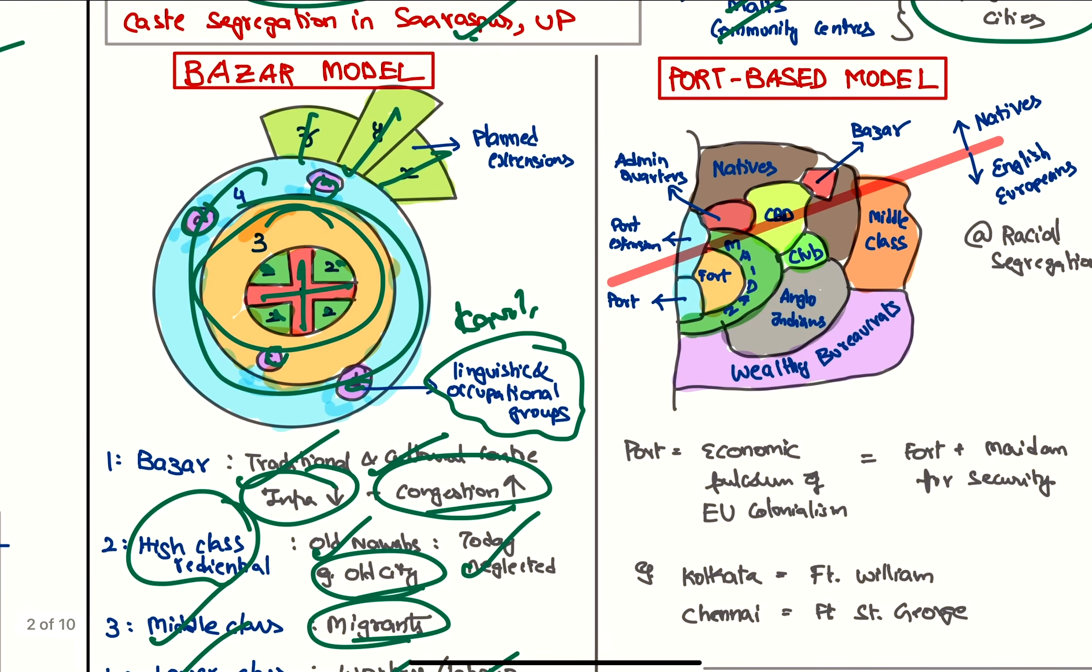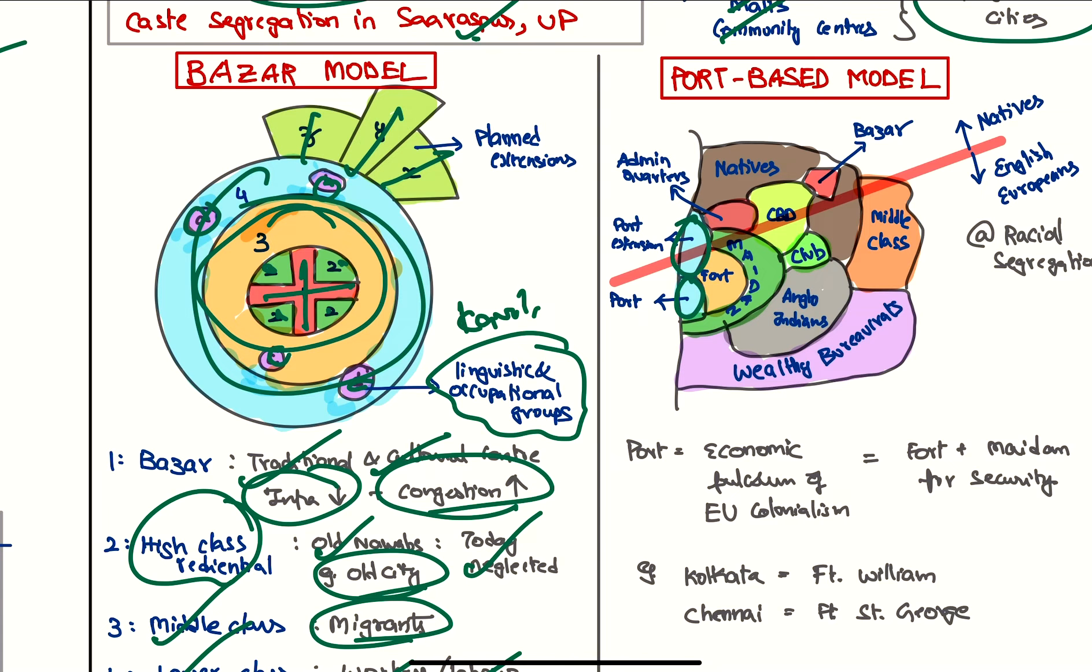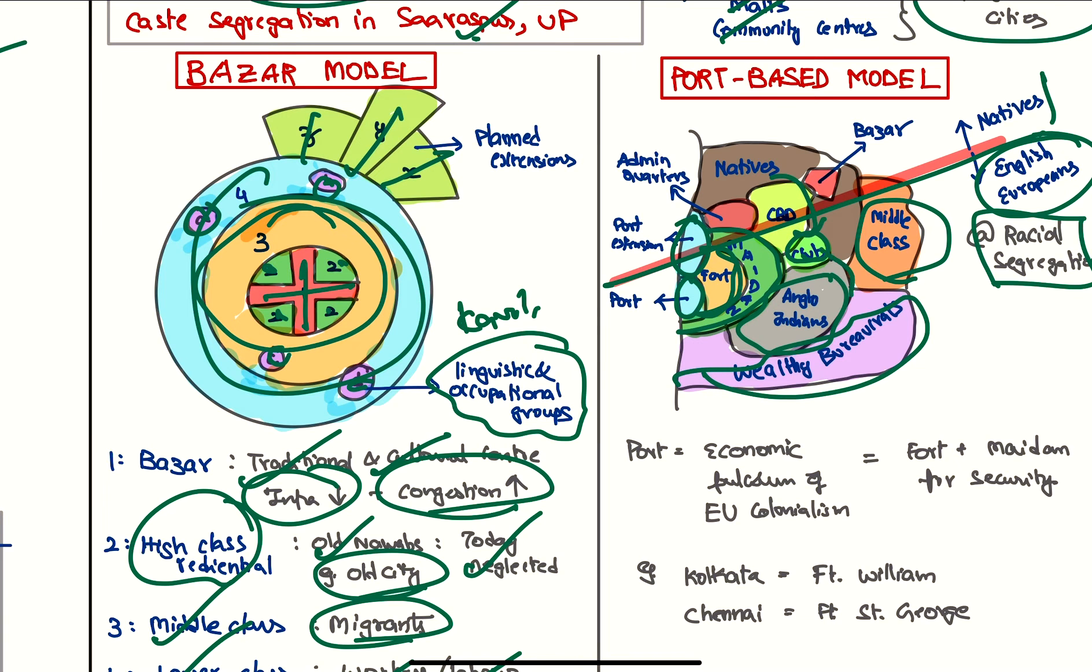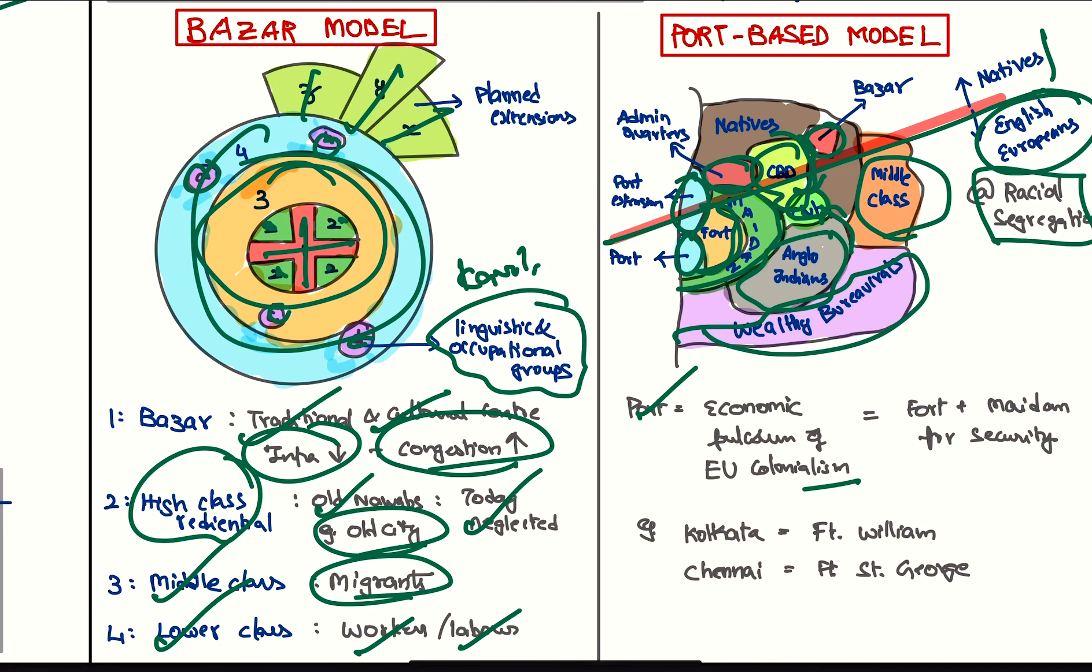Next is the port-based model. This is the port and this is the port's extension. This is a fort to protect the port, and then there is the buffer area. There is racial segregation seen here - natives live here and English Europeans who are very rich live here. Wealthy bureaucrats and middle class people live here, Anglo-Indians live here. There is a club where all people come and join. This is the central business district, we have bazaar here, these are the administrative quarters. So this is a port model. Port is very important for colonial powers because it was the economic fulcrum for them, so fort and maidan for their security. Examples are Kolkata's Fort William and Chennai's Fort St. George.